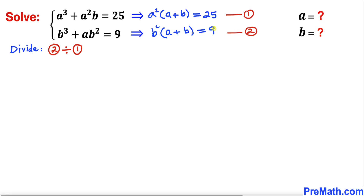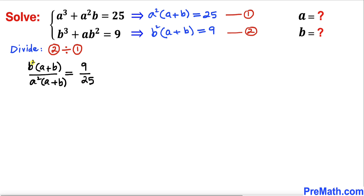Let's divide equation two by equation one. We write: b²(a + b) divided by a²(a + b) equals 9 divided by 25. Since b² and a² are both positive, and the right-hand side is positive, we can conclude that (a + b) is also greater than zero — that is, positive.